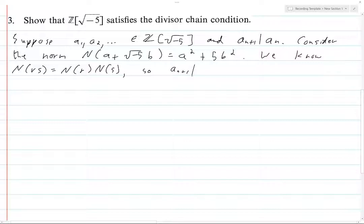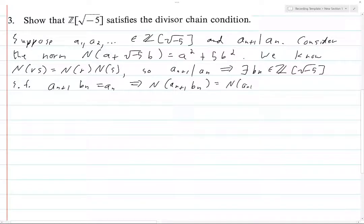So if a_{n+1} divides a_n, then there exists some b_n in Z adjoin square root of negative 5 such that a_{n+1} times b_n equals a_n, which implies that N(a_{n+1}) N(b_n) equals N(a_{n+1} b_n) which is equal to N(a_n).